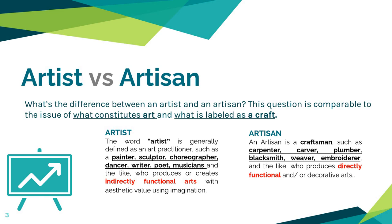On the other hand, look at the artisan. An artisan is a craftsman — such as a carpenter, carver, plumber, blacksmith, weaver, embroiderer, and the like — who produces directly functional and/or decorative arts. An artisan is essentially a manual worker who makes items with his or her hands, and using his skill or experience and talent, he or she can create things of great beauty as well as being functional.